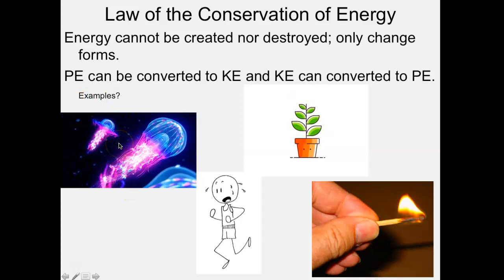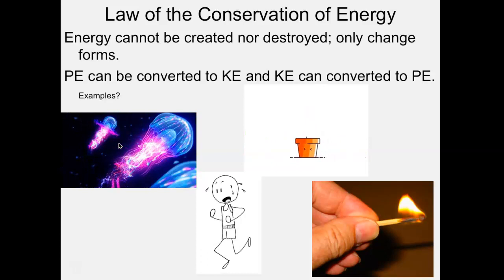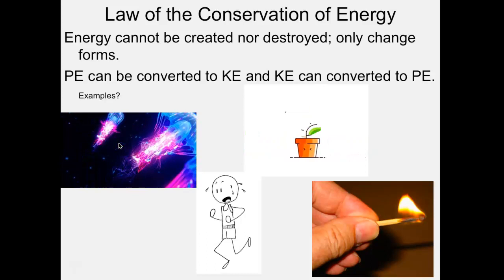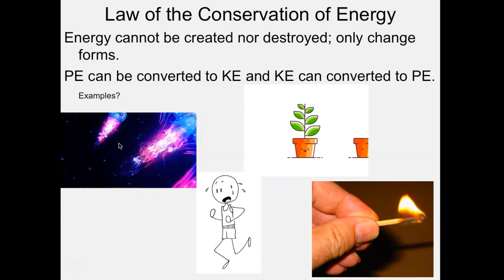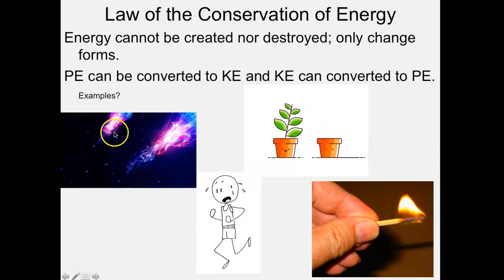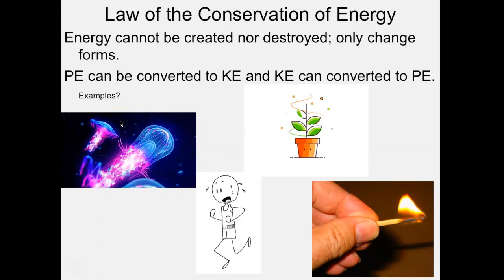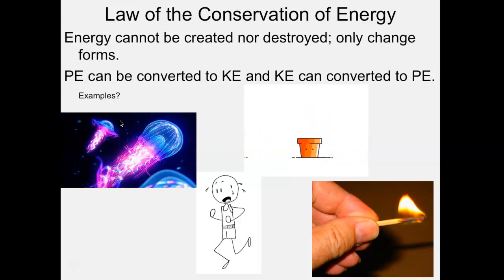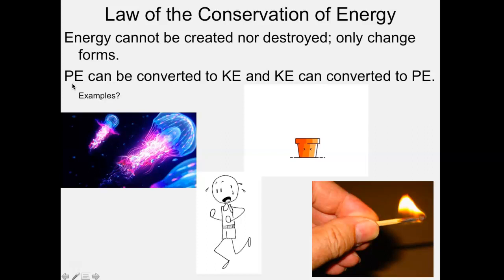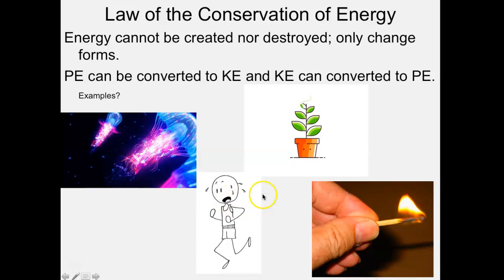These are bioluminescent jellyfish. Jellyfish are animals and they eat smaller creatures. The food they eat is potential energy — all chemicals have potential energy in their chemical bonds. What are these jellyfish doing? They're converting that potential energy into light and motion. Moving from here to there is kinetic energy, and light is also a form of kinetic energy because light photons move at the speed of light. So jellyfish take potential energy from food and convert it to motion kinetic energy and light kinetic energy.